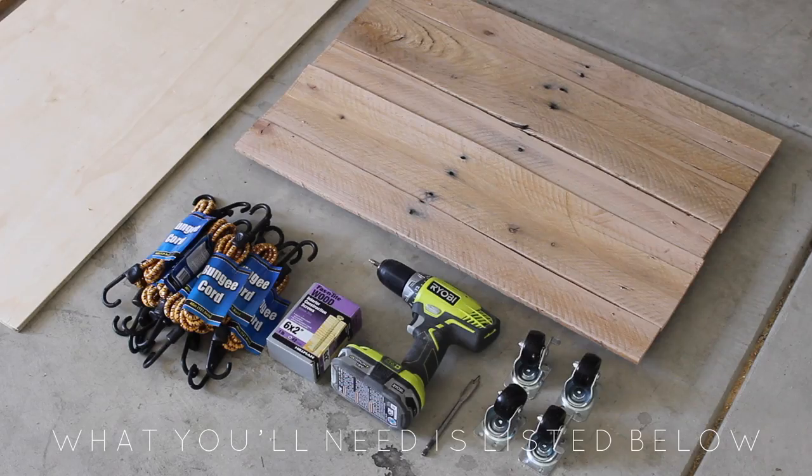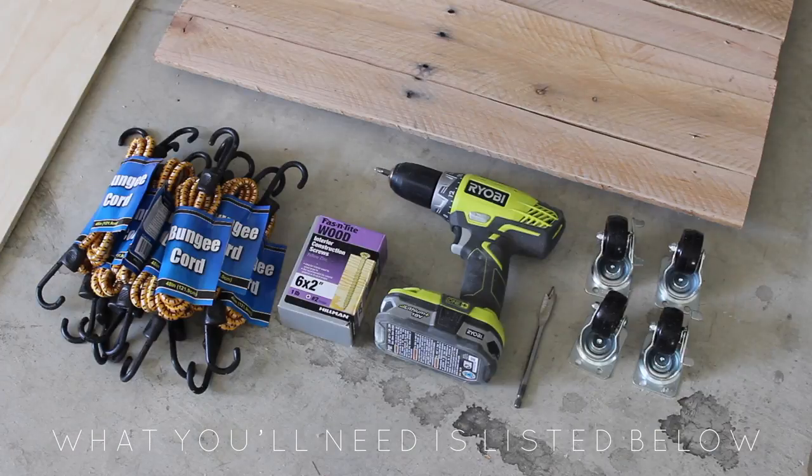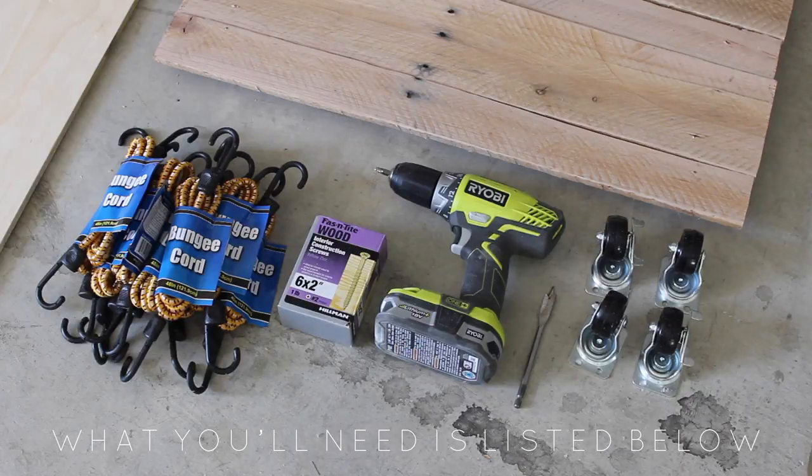For this build, you are going to need a power drill, wood screws, bungee cords which you can grab from your dollar store, four wheels. You can have the option that they lock. I do, so two of them have the lock option and two of them do not. And then a quarter of an inch drill bit and then just a regular drill bit for your screws.